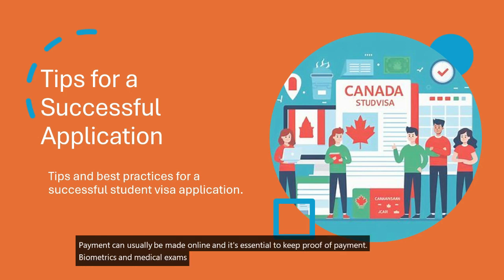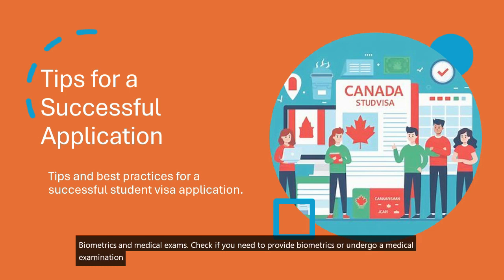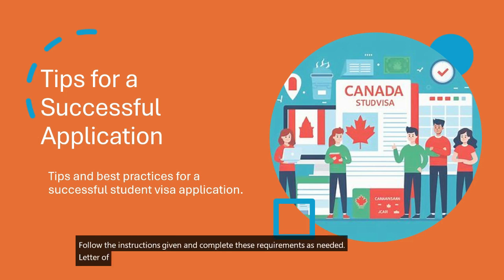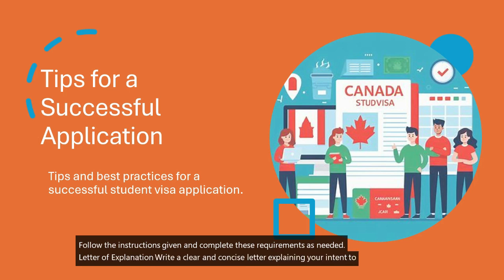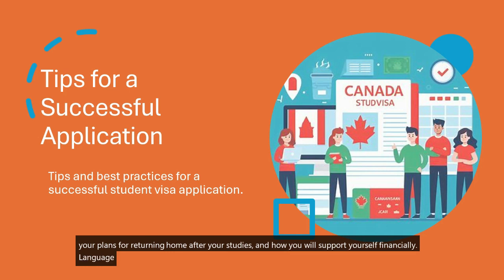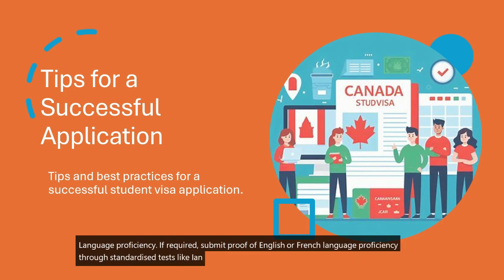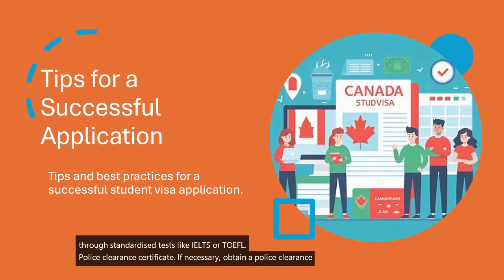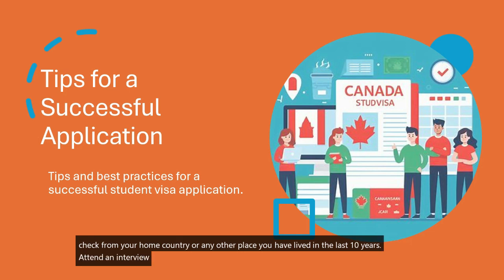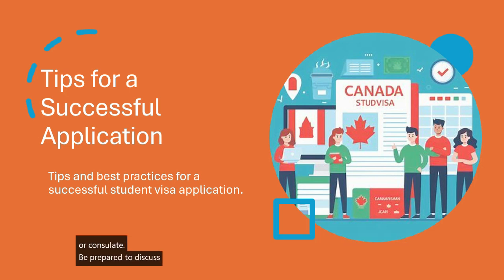Seventh, Biometrics and Medical Exams: check if you need to provide biometrics or undergo a medical examination, and follow the instructions given. Eighth, Letter of Explanation: write a clear and concise letter explaining your intent to study in Canada, your plans for returning home after your studies, and how you will support yourself financially. Ninth, Language Proficiency: if required, submit proof of English or French language proficiency through standardized tests like IELTS or TOEFL. Tenth, Police Clearance Certificate: if necessary, obtain a police clearance certificate or background check from your home country or any other place you have lived in the last 10 years.